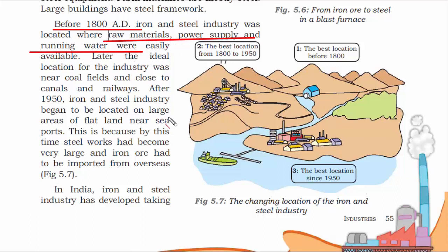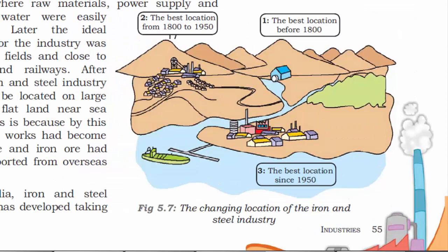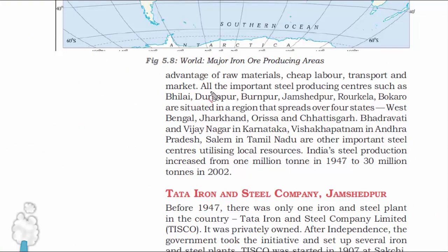Before 1800 AD, iron and steel industries were located where raw material, power supply, and running water were easily available — common sense to create an industry next to ideal raw material sources. Later, thinking changed: the industry moved near coal fields and close to canals and railways for transportation. After 1950, they started shifting the industry to flat land near seaports, because ships are the cheapest way of transportation and allow bulk export of iron to different nations.